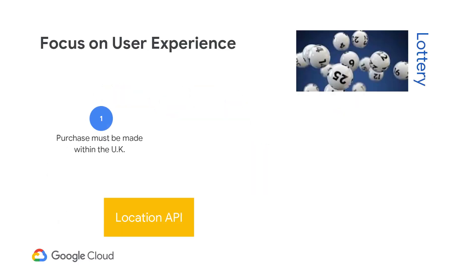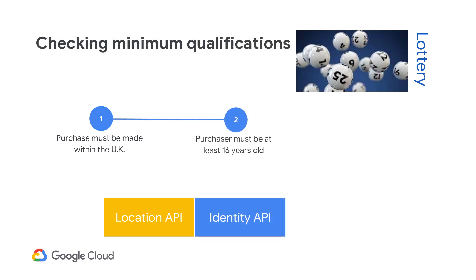Let me give you an example. A lottery company in the UK wanted to make purchasing a lottery ticket easy for their players. Their goal was to give everyone the ability to make a purchase anytime, anywhere. However, there were some regulations that needed to be met. First, the purchase must be made from within the UK, requiring the application to geolocate the player — luckily, most telcos have a location API available. Next, the purchaser must be at least 16 years of age, so the application must identify the player through an identity API.